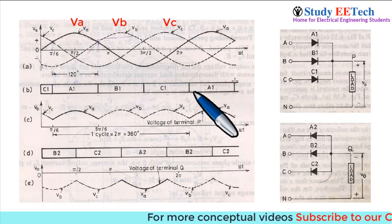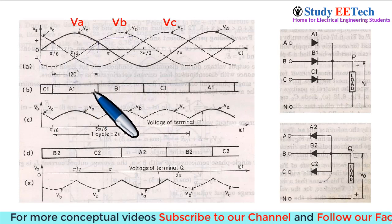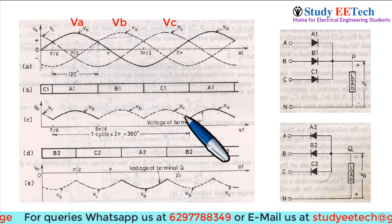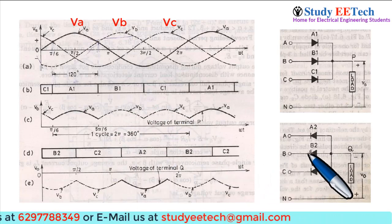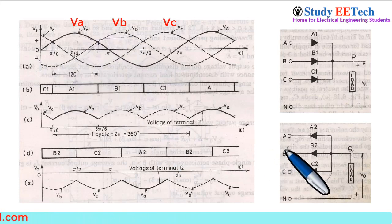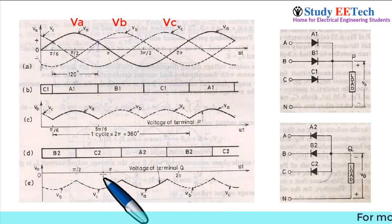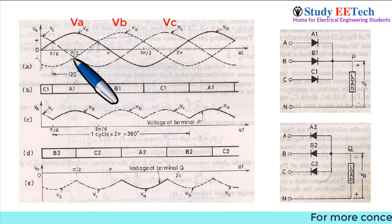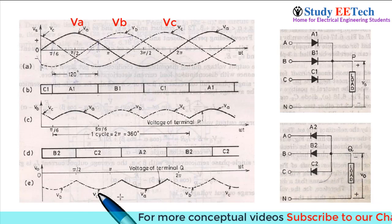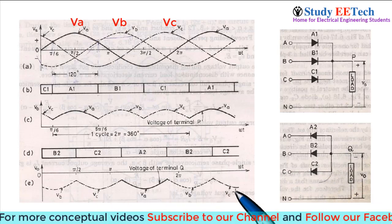At the output, when A1 conducts from one crossover point to the next and others are off, we get VA voltage. Similarly we get VB voltage and VC voltage. The same logic applies to the common anode configuration — from the relevant segment VB is the lowest potential, so we get B phase voltage, then C2 is forward biased and we get VC, and then VA and other voltages follow.